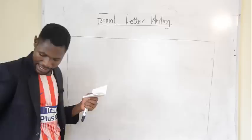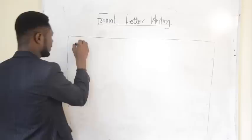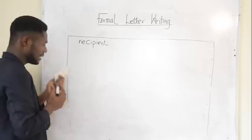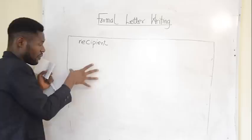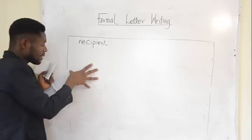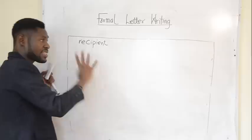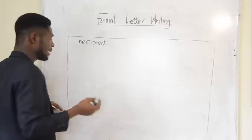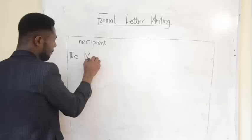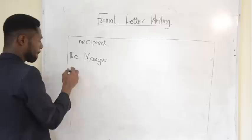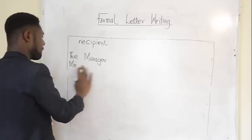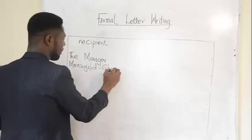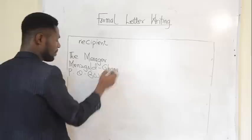Now let's go to the recipient's address. With the recipient, it is tilted at the left-hand side of your paper. It is noteworthy that the recipient's address could also be at the tail end of your writing — after everything, you bring the recipient's address at the tail end of your letter. For example, if you are writing to a manager or CEO of Men's Goat Ghana, Accra.